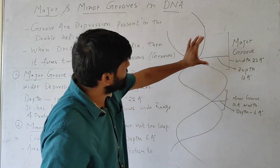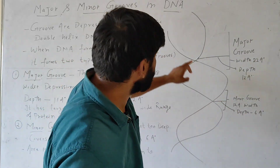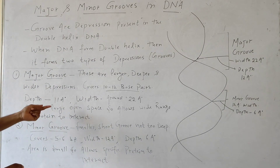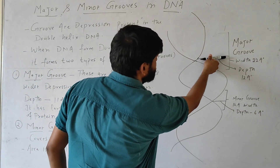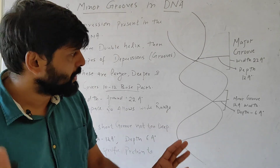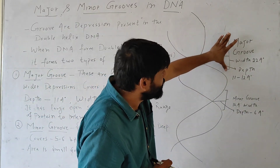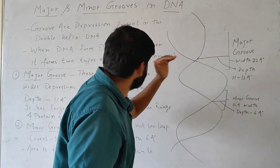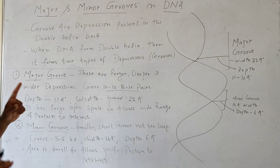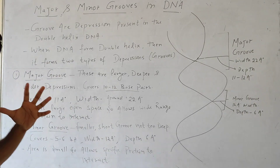These larger depressions cover 10 to 12 base pairs. The depth of the major groove is around 11 to 12 angstroms. So these are the wider, larger, and deeper major grooves.